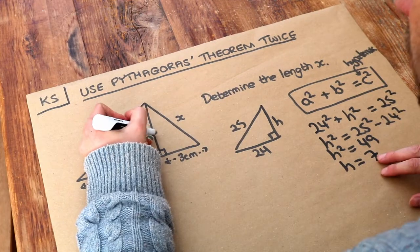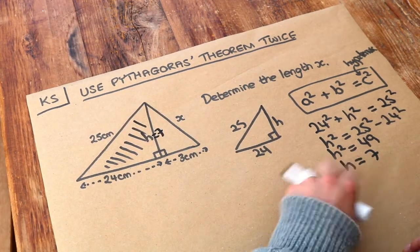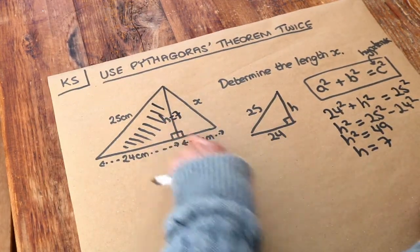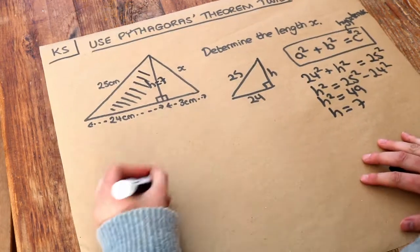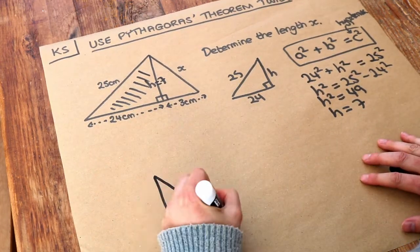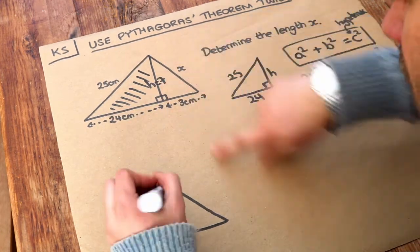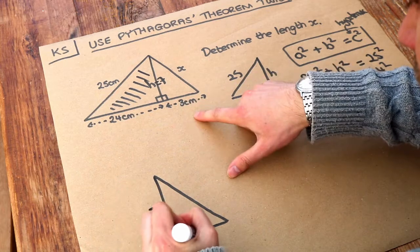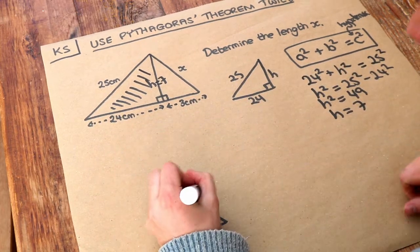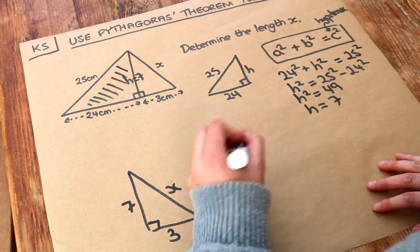And because we now know two of the lengths of this right-angle triangle here, we can then use Pythagoras theorem again to work out x. So let's concentrate on this right triangle. We know that this height is 7, this bottom length is 3, and we're trying to find out the hypotenuse x. So let's use Pythagoras theorem again.